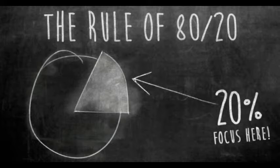How does it work? If you have a list of 10 items to accomplish, two of those items will turn out to be worth more than the other eight items put together.